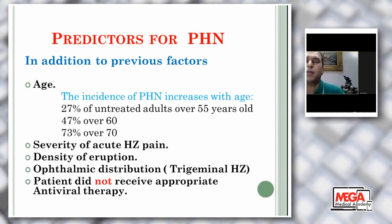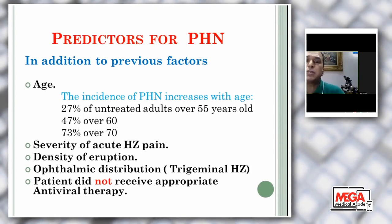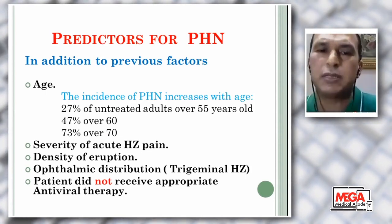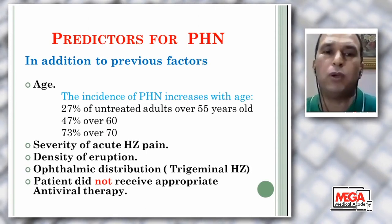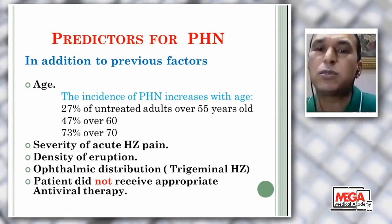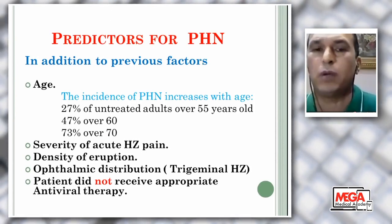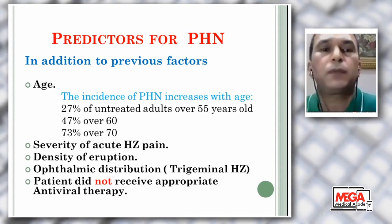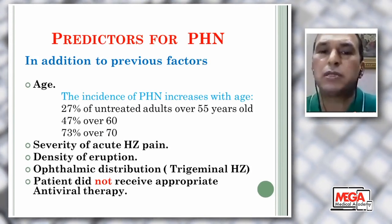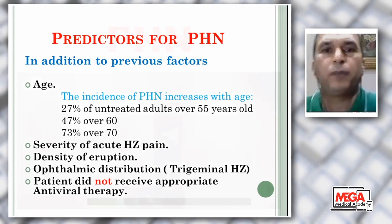The severity of acute herpes zoster pain is a key predictor — the more severe the pain, the more likely to develop post-herpetic neuralgia, because this means severe ganglionitis and neuritis. The density of eruption: the more dense, the more likely to develop post-herpetic neuralgia. Ophthalmic branch or trigeminal herpes zoster is more likely to develop post-herpetic neuralgia even in young patients. Patients who did not receive appropriate antiviral therapy are also at risk, because antiviral therapy has a protective effect.